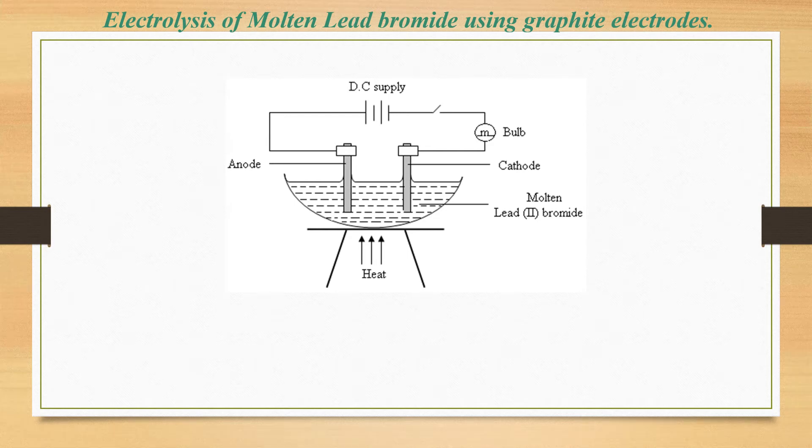In this video, we are going to look at electrolysis of molten lead bromide using graphite electrodes. Remember, we are using graphite because they are relatively inert, so these electrodes won't react with our lead bromide. We shall start with closing the switch. Remember, electrolysis will involve electricity, that's why we have our direct current supply here.